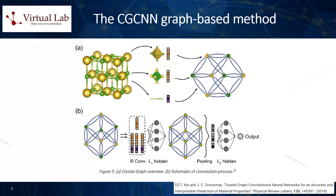In this way, the most basic bulk state properties of materials — such as the formation energy, absolute energy, band gap, Fermi energy, bulk modulus, shear modulus, and Poisson ratio — can be predicted for new material structures and compositions based on this original training dataset.